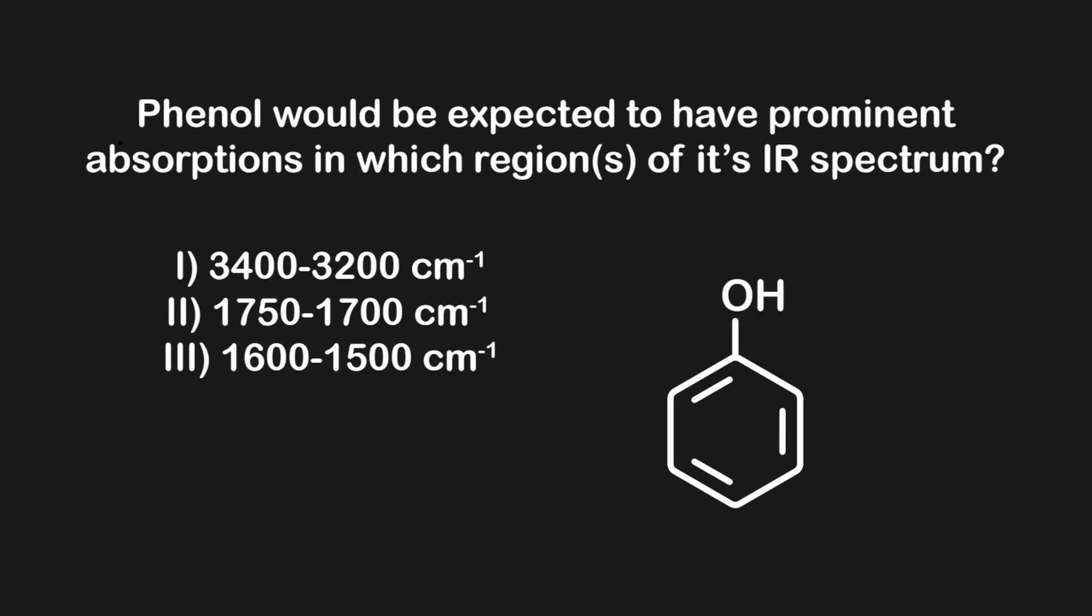Alright, let's go ahead and cap this lesson off by looking at one more practice problem. This question asks, phenol would be expected to have prominent absorptions in which region of its IR spectrum? To begin, we will identify the functional groups that pertain to each of the stretches listed below. First, 3400 to 3200 refers to either an N-H or an O-H single bond,